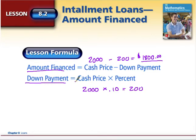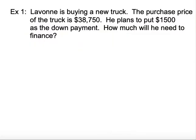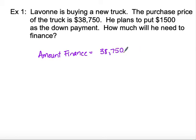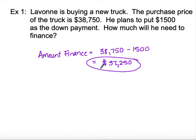Those are the formulas we'll use for this part of the lesson. When we talk about Section 8.3, we'll cover how to calculate monthly payments. Our first example: Lavon is buying a new truck. The purchase price is $38,750 and he has saved $1,500 as the down payment. How much will he need to finance? The amount financed is a simple calculation — he takes the total purchase price of $38,750 minus his $1,500 down payment, giving an amount financed of $37,250. That amount financed becomes the principal of what he's borrowing from the bank.